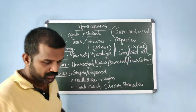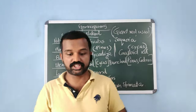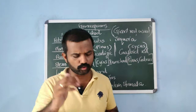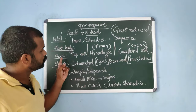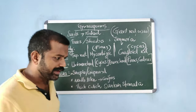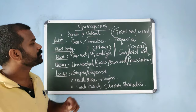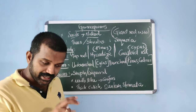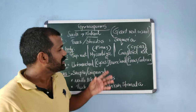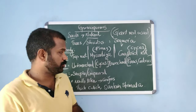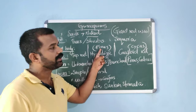About the plant body, the main plant body is the sporophyte, which is well differentiated into root, stem, and leaf. Regarding root morphology, generally a tap root is seen in gymnosperms. Mycorrhiza — a symbiotic association between fungus and roots of higher plants — is seen in some species.